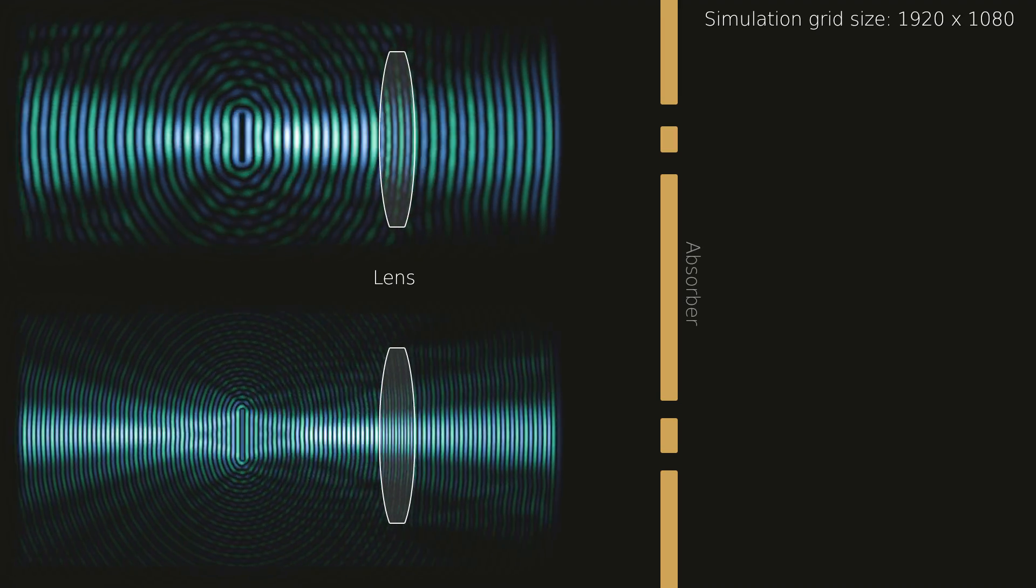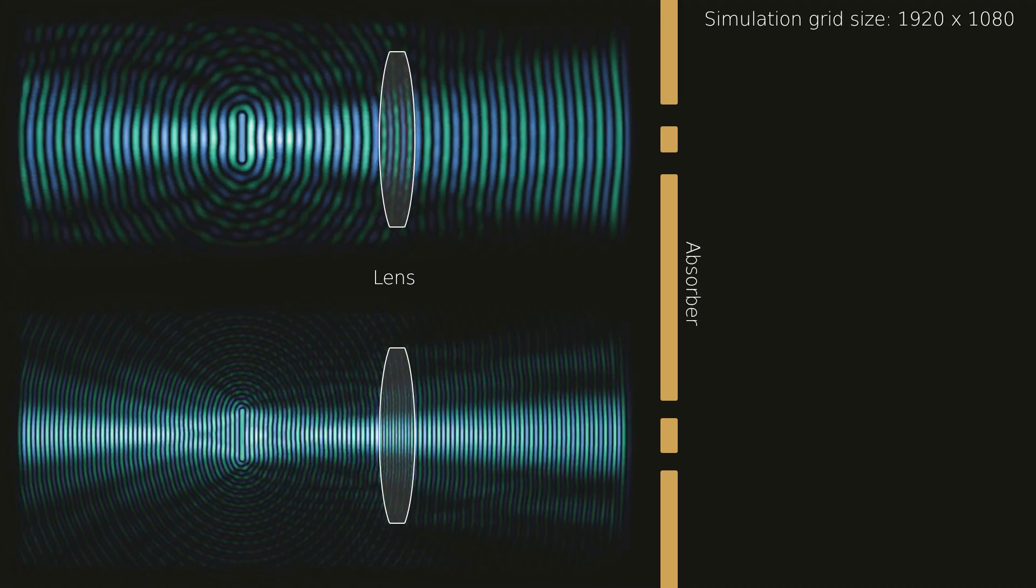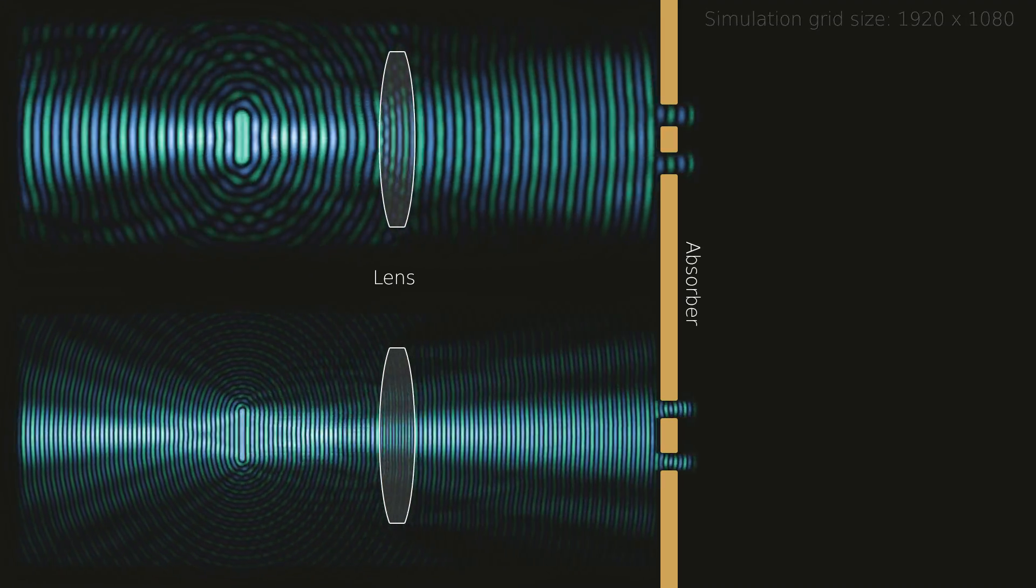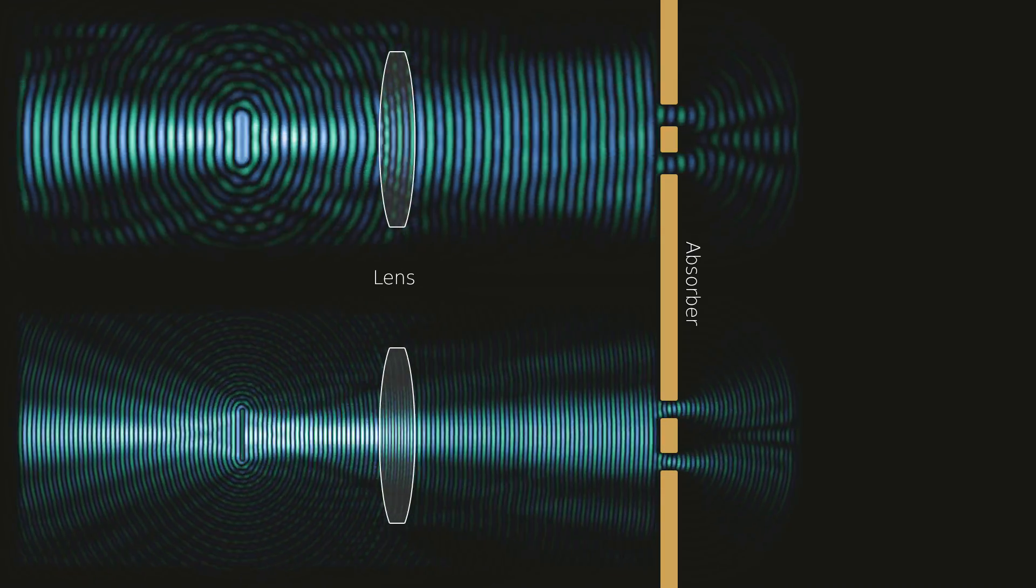Additionally, absorbers can be placed where needed. For example, an absorber with holes can be placed into the beam path to create the well-known double-slit interference pattern.